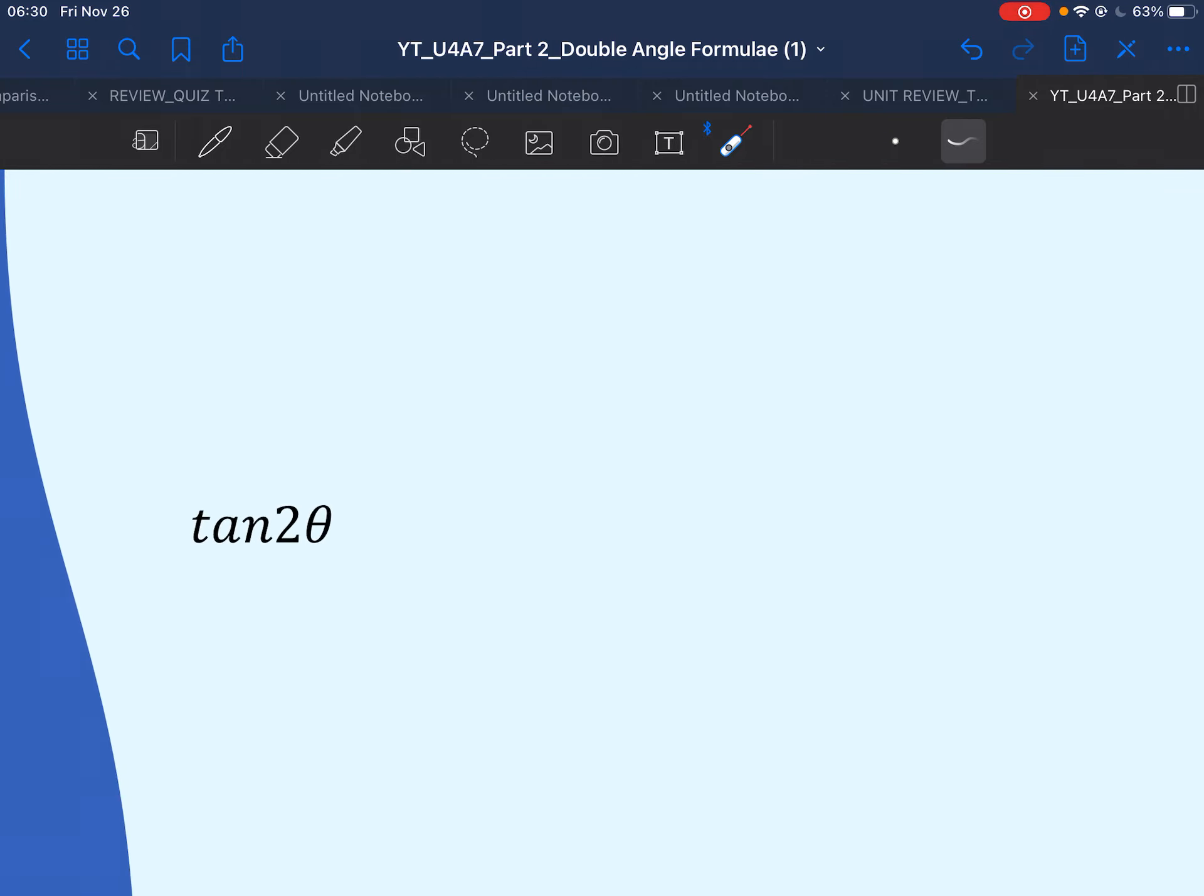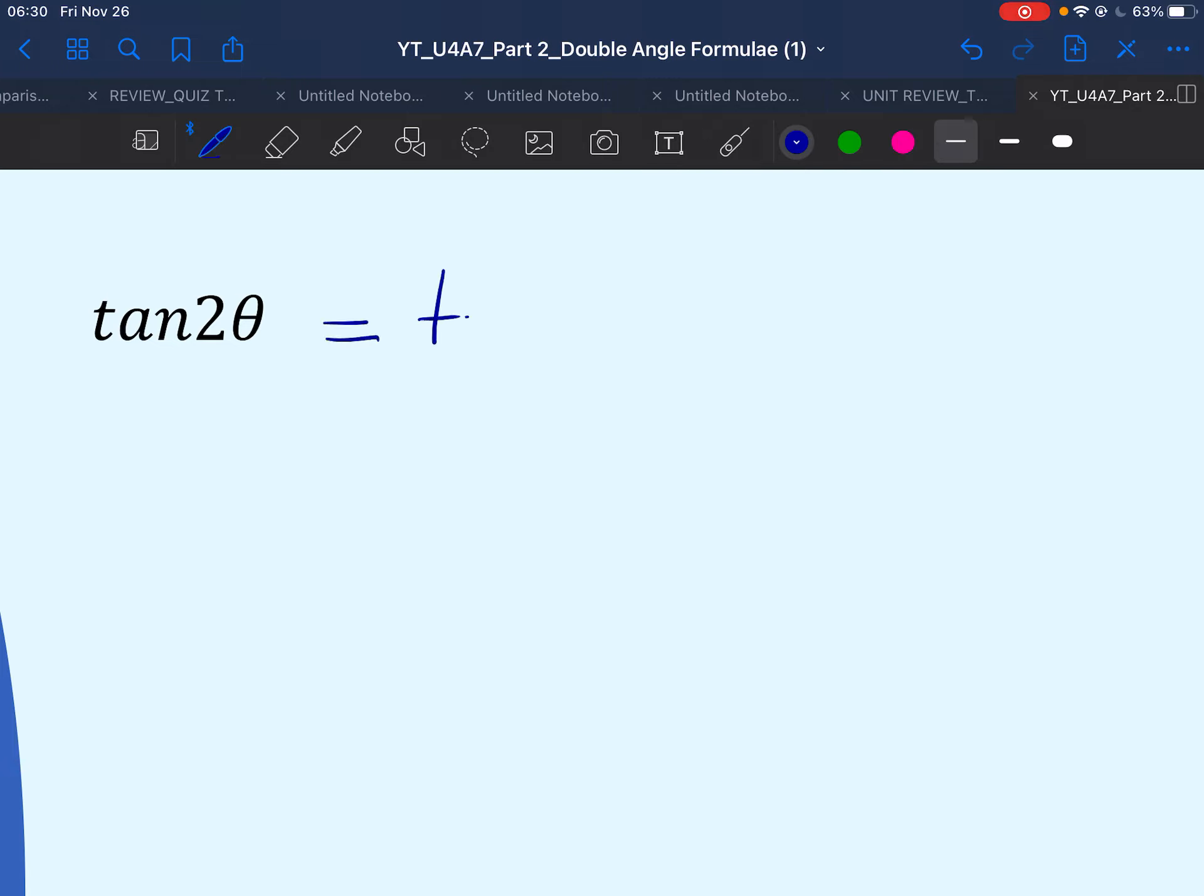Now, moving on to our last double angle formula for the primary ratios, tan 2 theta, very similar process to the one that we use for sine and cos 2 theta. We'll write it as tan of theta plus theta. And I will color code them because we're using tan more than once here.